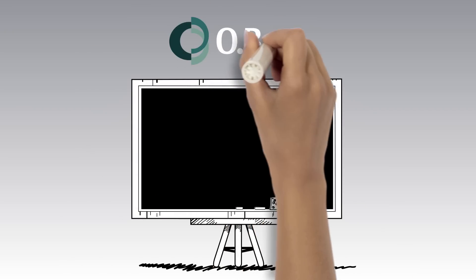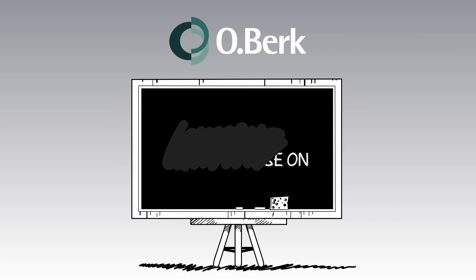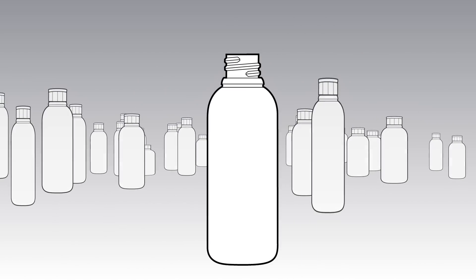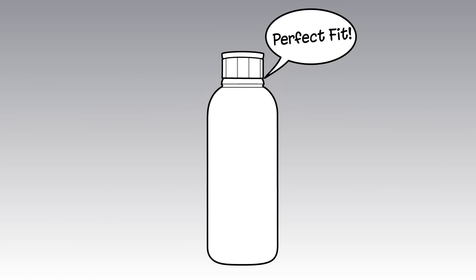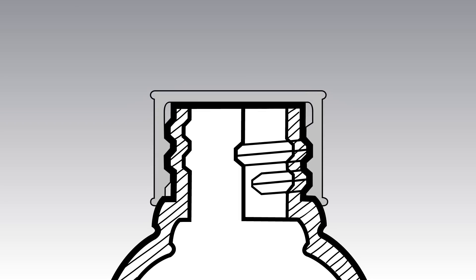The O.Berk Company presents Packaging Crash Course Series: Closures 101. Common container and closure dimension specifications were established to ensure a perfect fit and successful packaging. A specific letter represents each finish dimension. The letter I is used for the inside opening diameter of the finish.